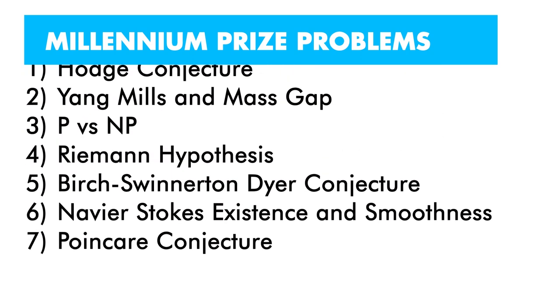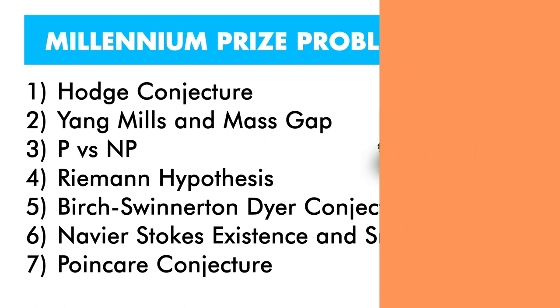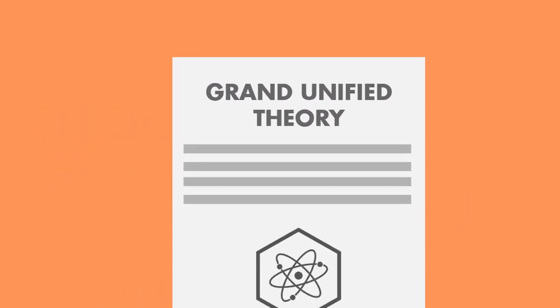The Yang-Mills and Mass Gap problem is another one of the elusive Millennium Prize problems, a set of seven problems given in the year 2000 by the Clay Mathematical Institute, and solving one of them can earn you a million dollars. For a long time, the holy grail of physics has been to construct something called a Grand Unified Theory, or GUT.